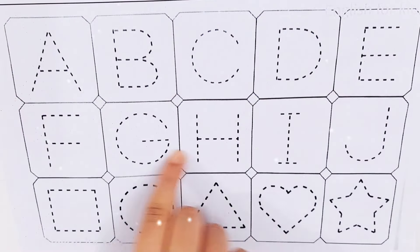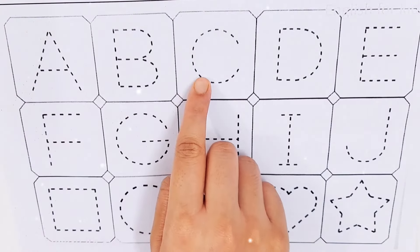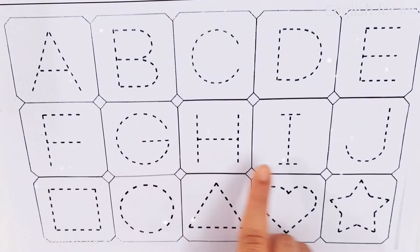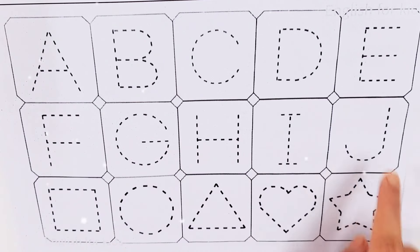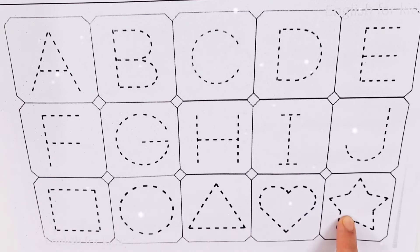Today we'll try to learn some alphabets and shapes. A, B, C, D, E, F, G, H, I, J. Square, circle, triangle, heart, star.